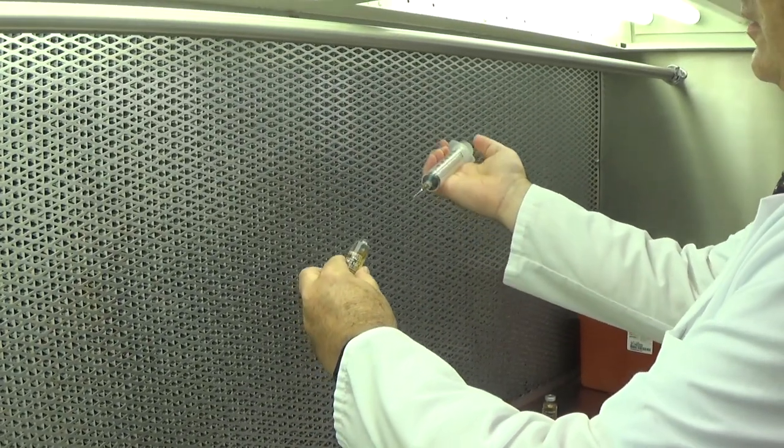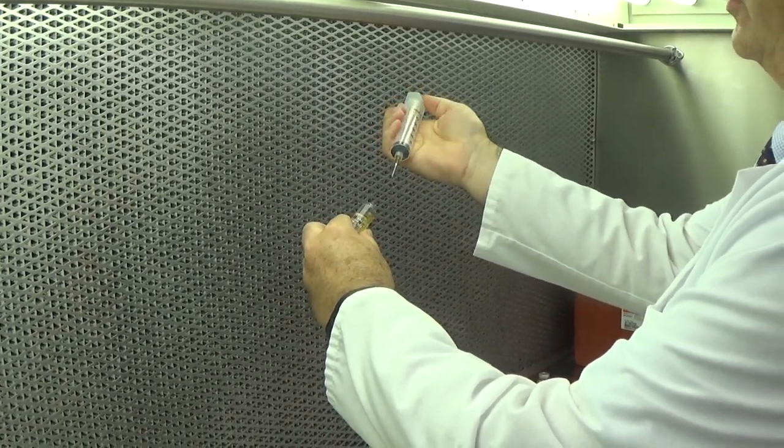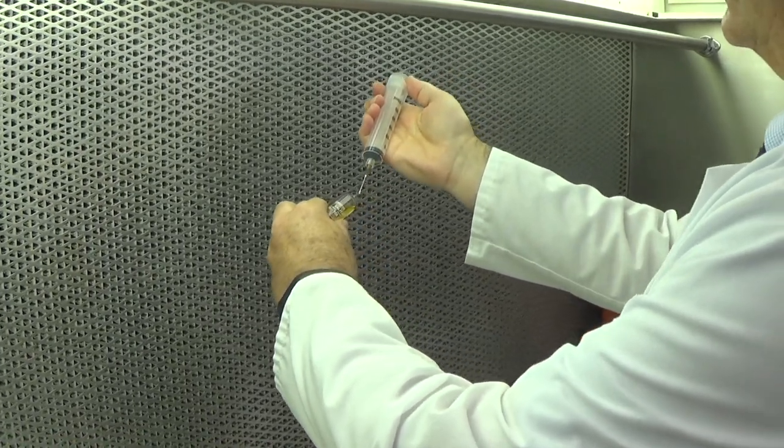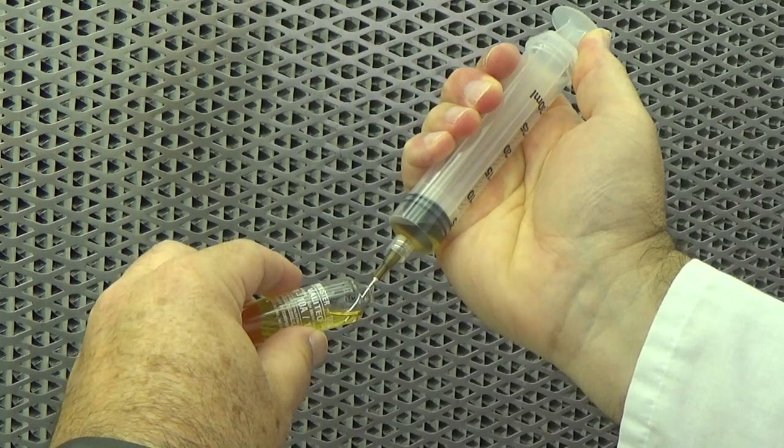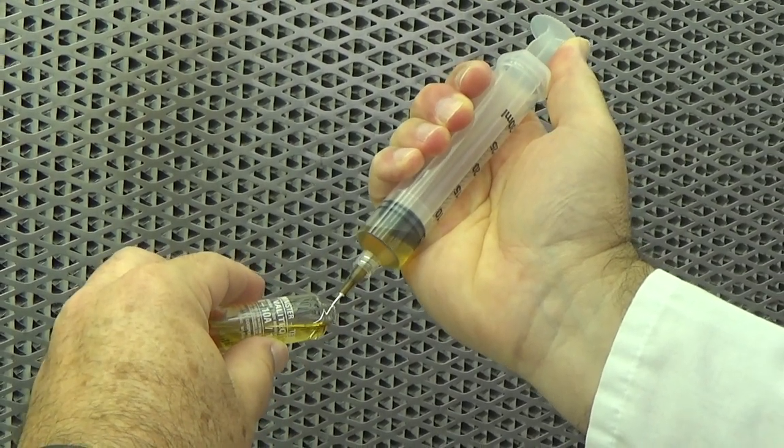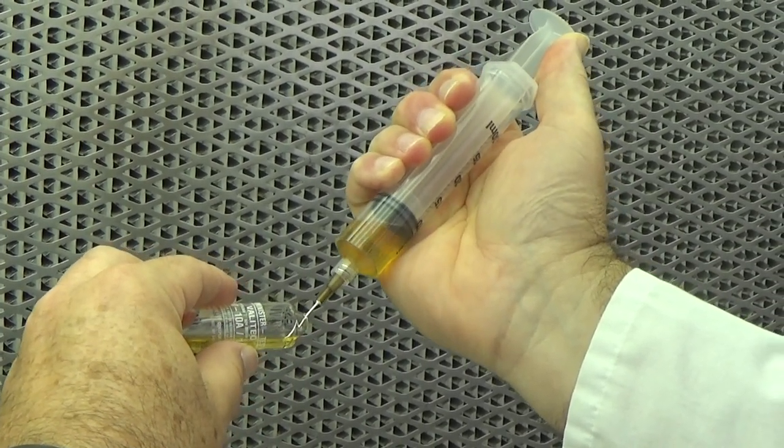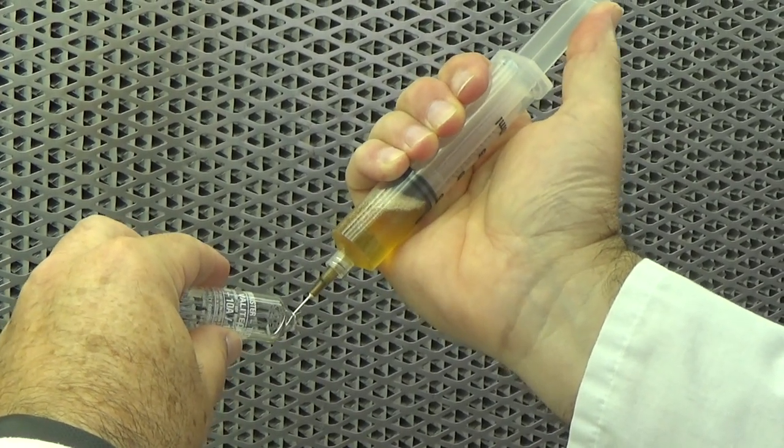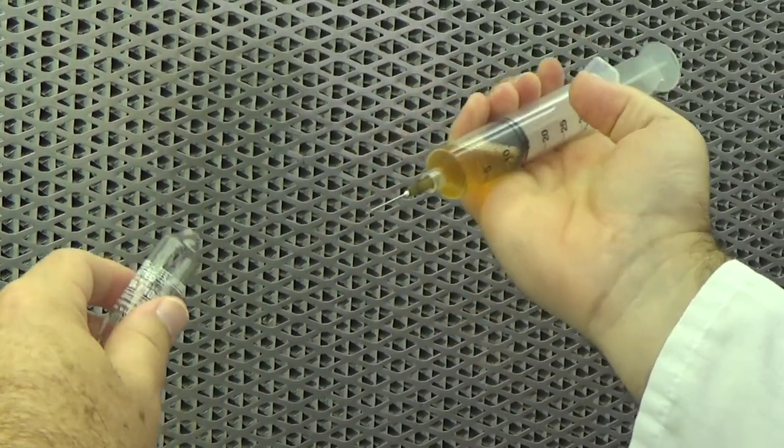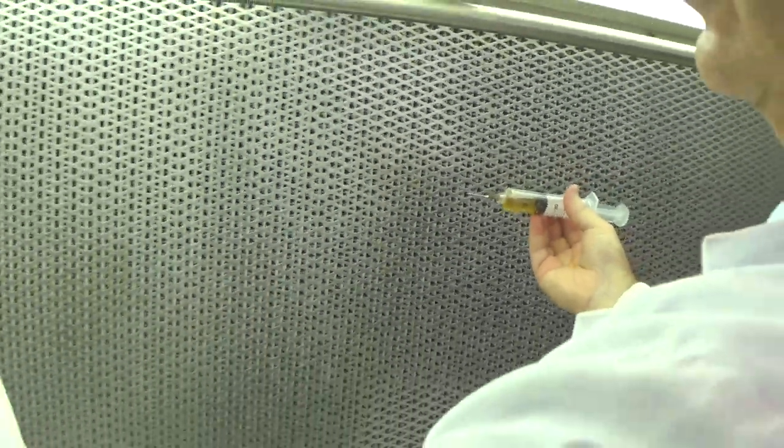To withdraw the contents, I'm going to grip the needle and syringe in such a way to introduce the needle into the liquid and start withdrawing the contents. Once all contents are withdrawn, this is disposed of in a sharps container.